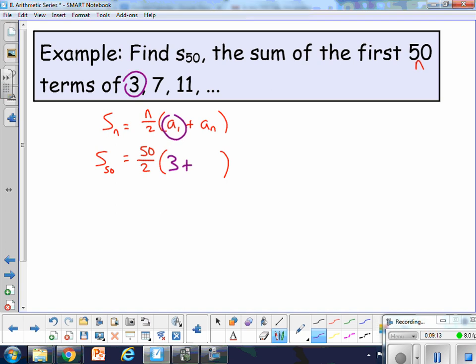Now, A n though, we need the 50th term. We don't know that yet, but we know how to find it. The 50th term, if this sequence kept going, the 50th term out here can be found by just doing the explicit formula, which is first term plus the common difference in this case is 4 times n minus 1. So we're just finding a specific term.